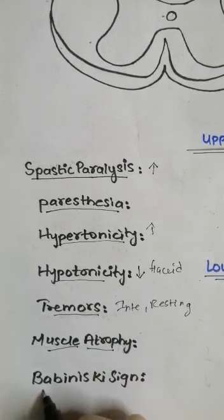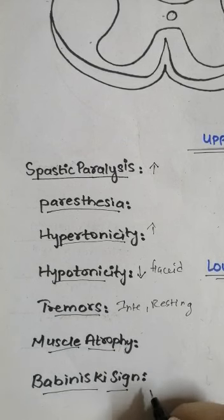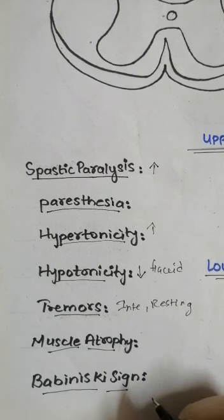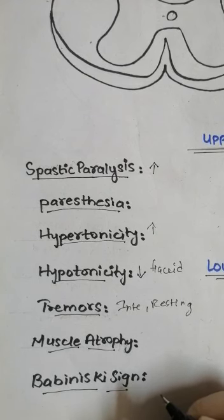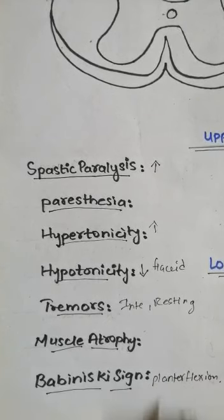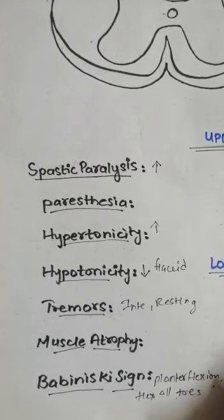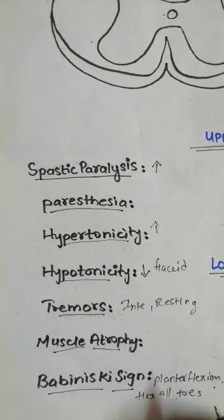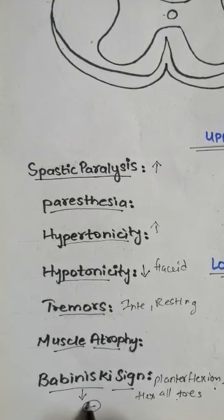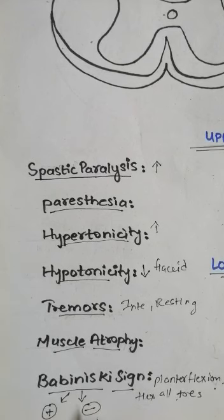The most important sign used in spinal cord lesions is the Babinski sign. If a superficial reflex is elicited by taking a needle-like pin at the lower sole of the feet, there will be plantar flexion of the big toe and flexion of all the toes. When there is flexion of all the toes and plantar flexion of the big toe, this is called the negative Babinski sign, or the normal Babinski sign. The abnormal Babinski sign is called the positive Babinski sign. Normally, a negative Babinski sign is present.